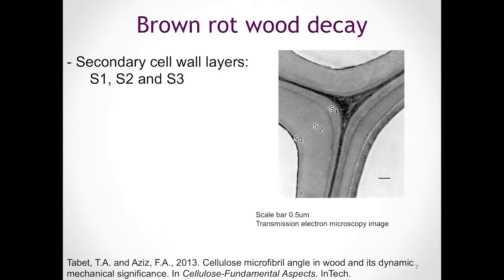You can see that the S1 layer is closest to the middle lamella, right here, and then we have our S2 layer, which is quite large and spans most of the secondary plant cell wall, and then closest to the lumen of the cell, we have our S3 layer.